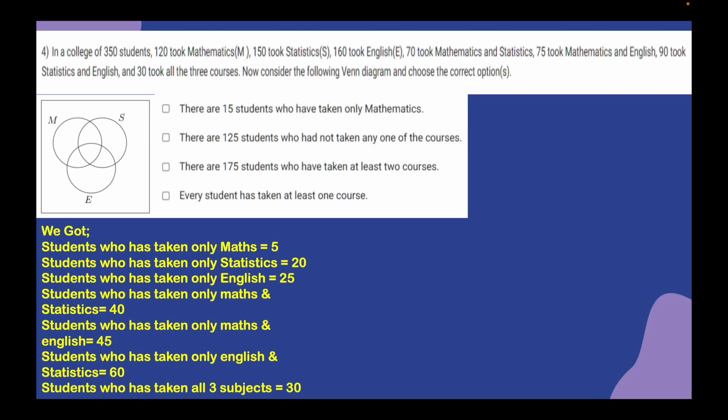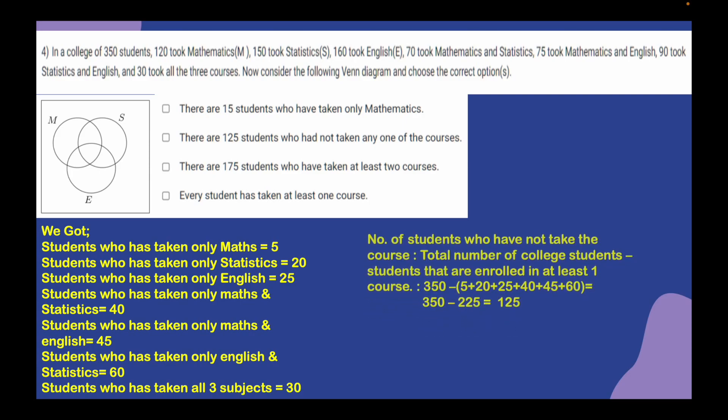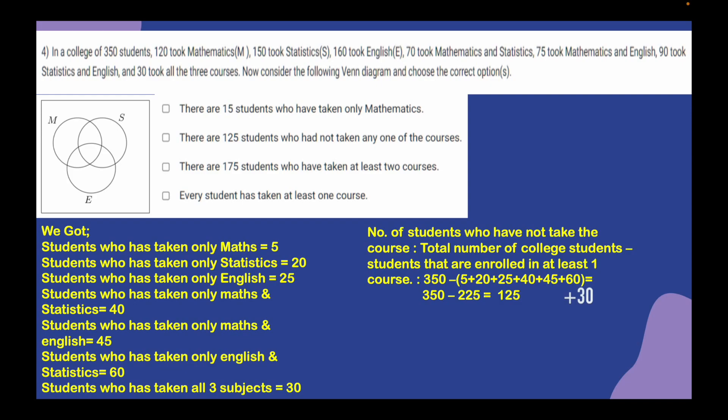Checking the second option — there are 125 students who did not take any of the courses. To find this, we take the total 350 students and subtract all students enrolled in at least one course: 5 plus 20 plus 25 plus 40 plus 45 plus 60 plus 30 equals 225. So 350 minus 225 equals 125. Option 2 is correct.